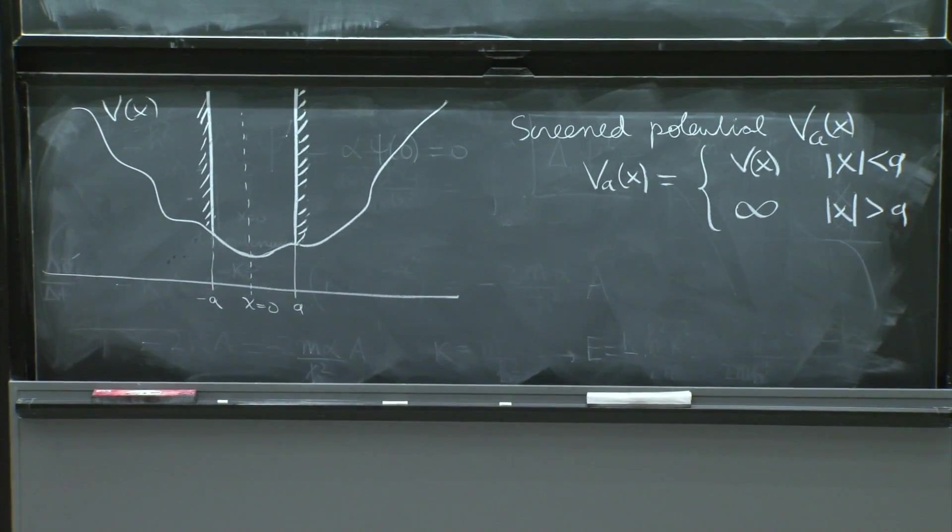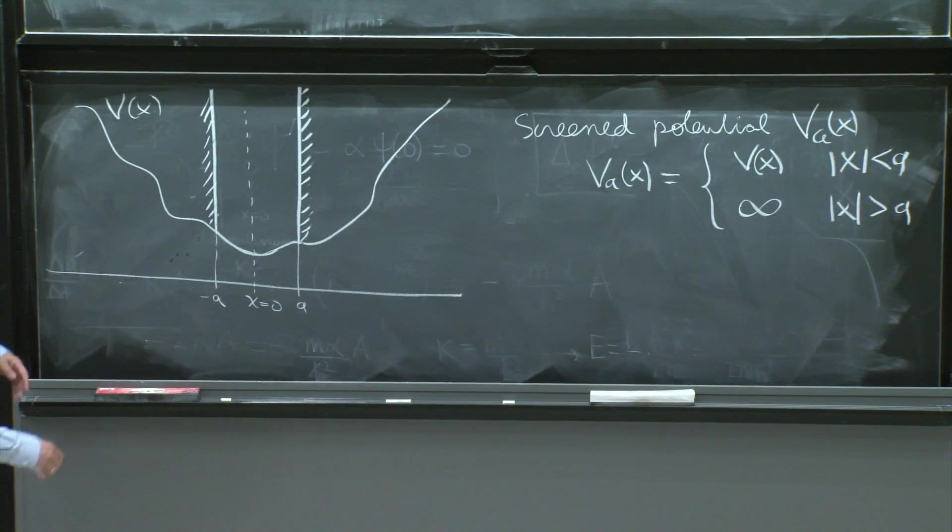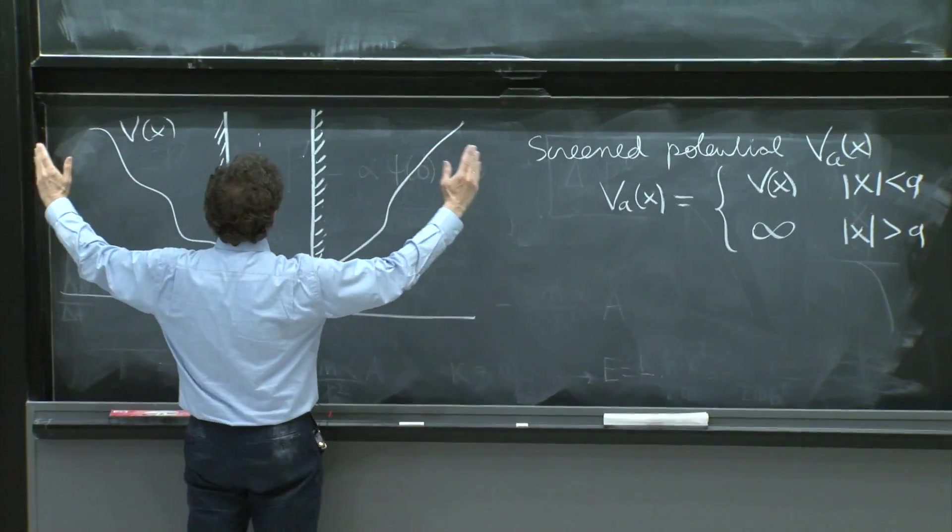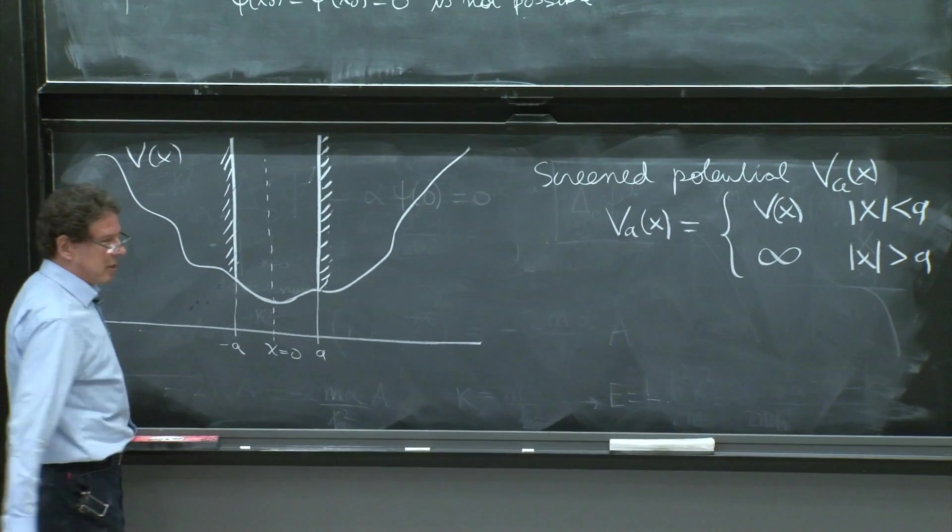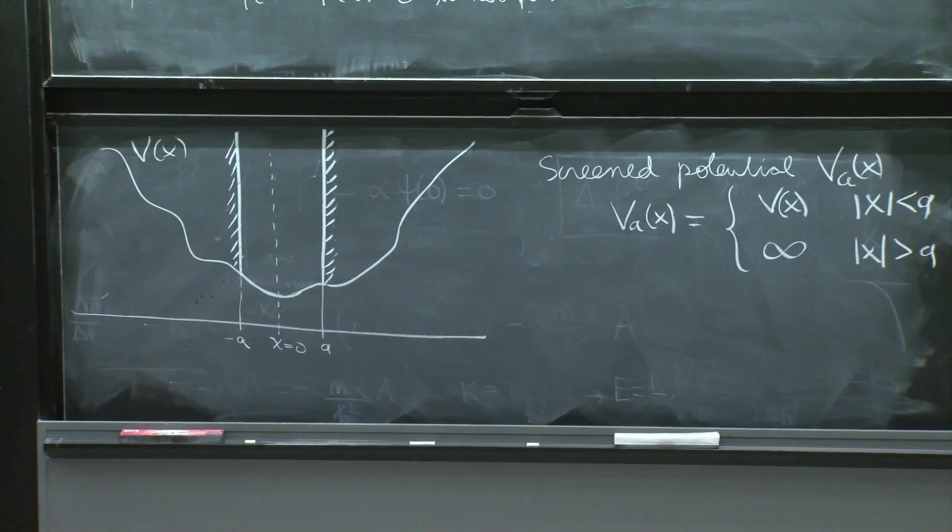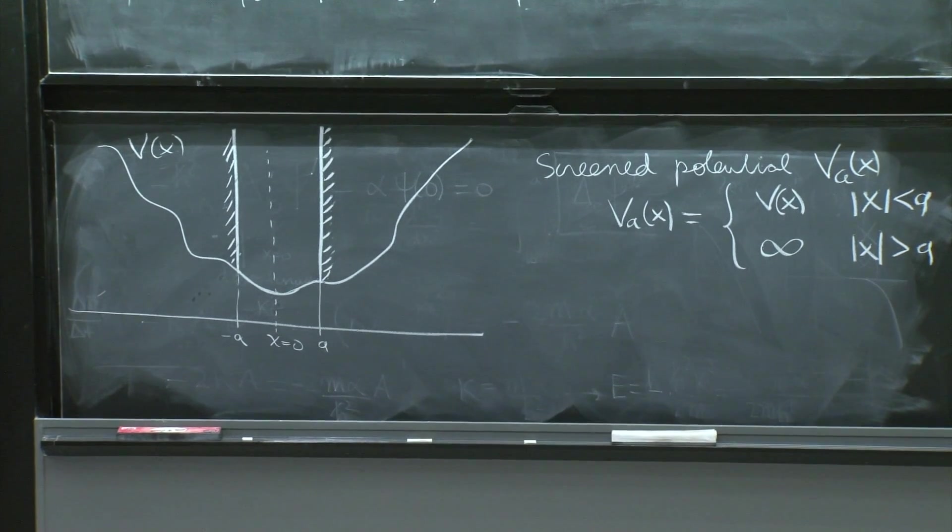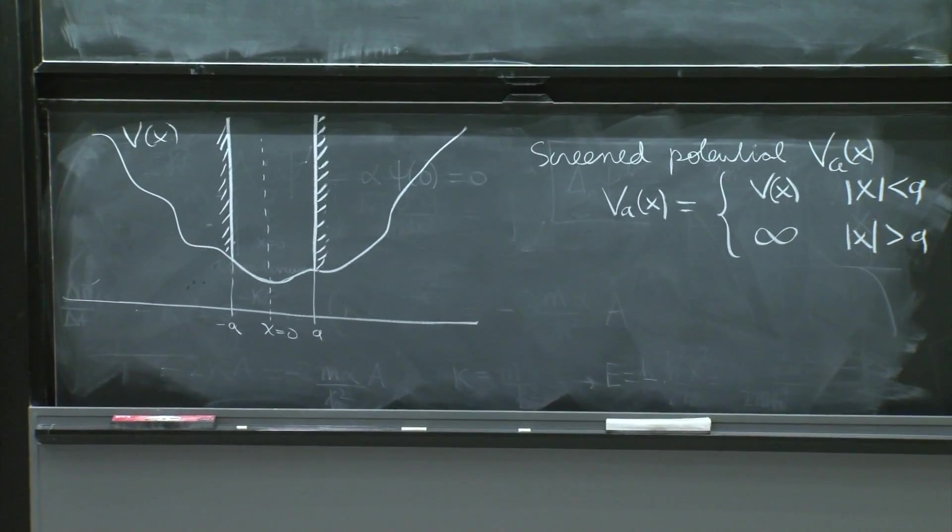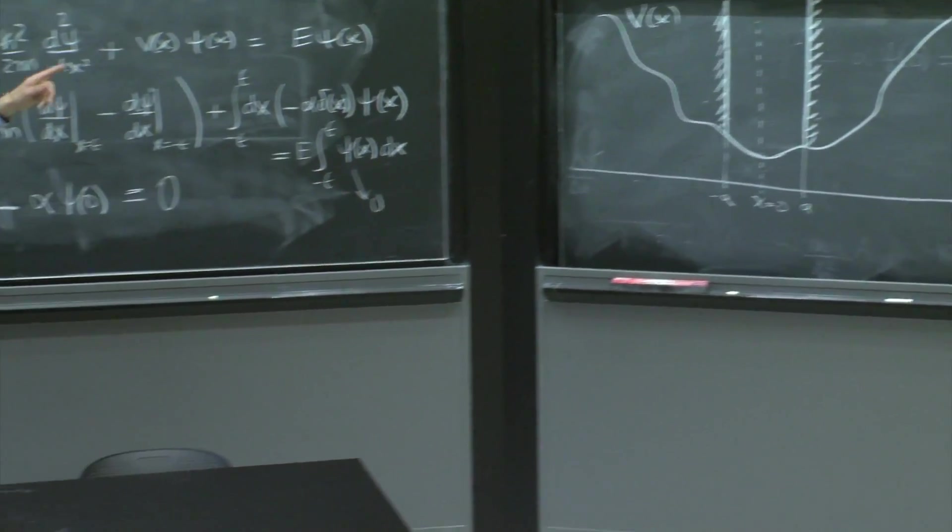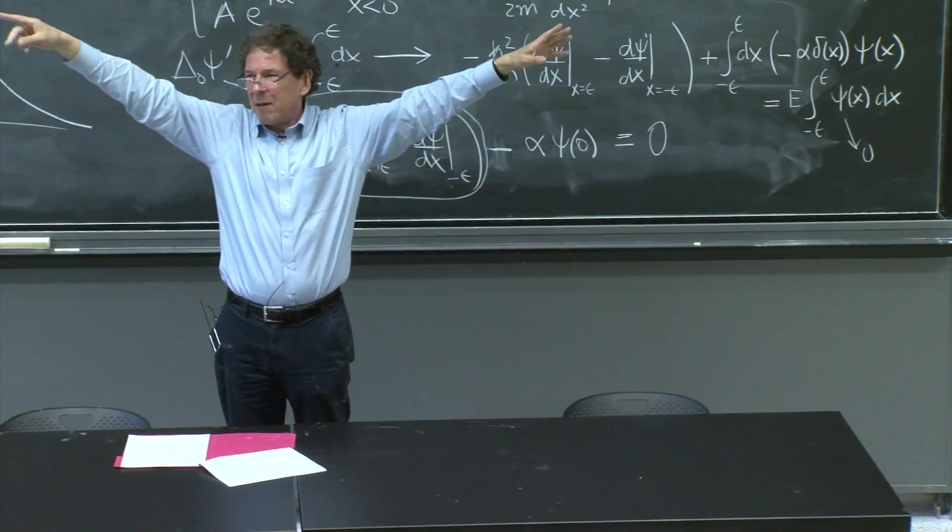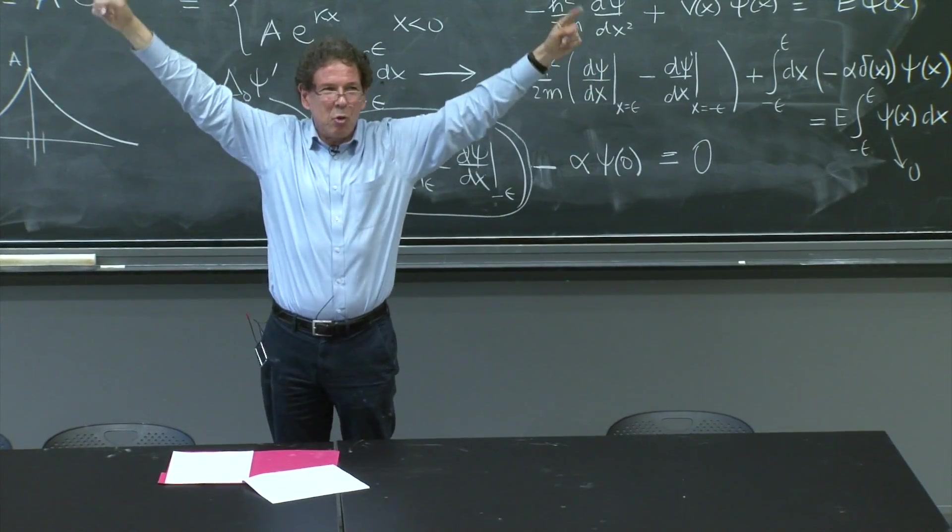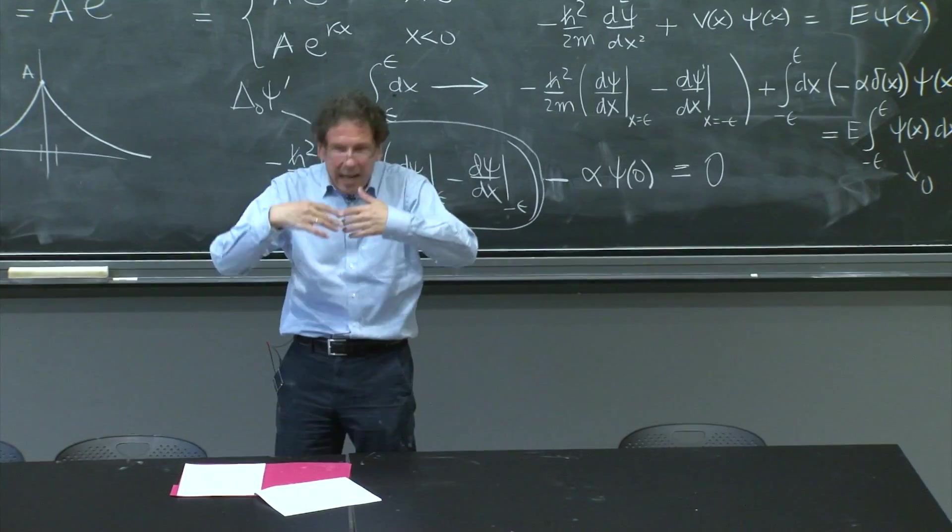And now we intuitively argue that as I take a to infinity, the bound states of the screened potentials become the bound states of your original potential. Because when the screen is very far away, up to infinity, you've got all your potential. And by the time you have bound states, they're decaying. So the screen is not going to do much at infinity.